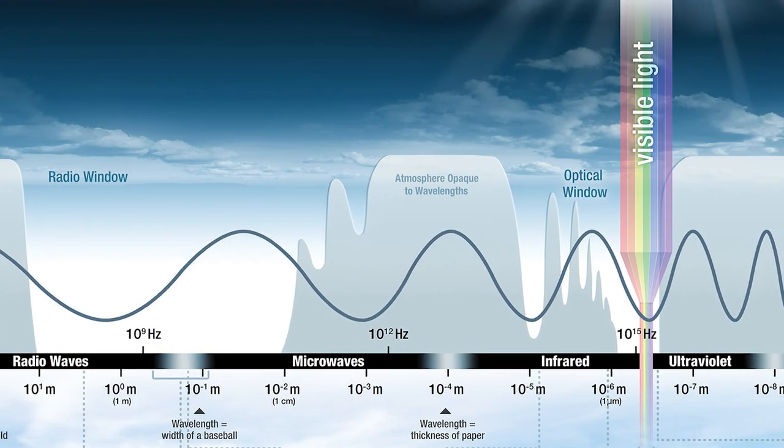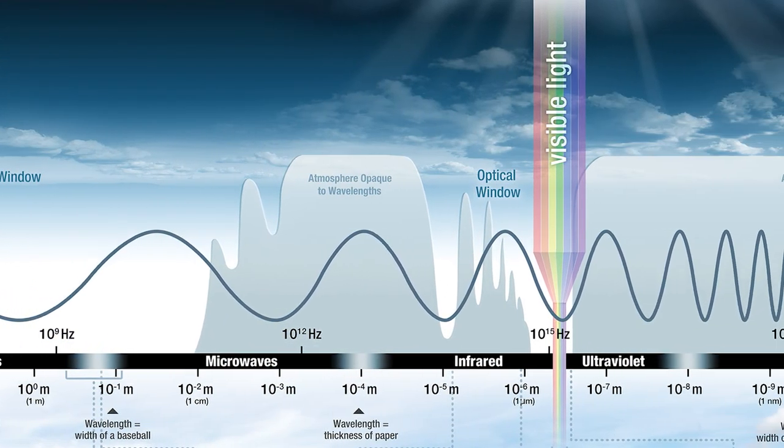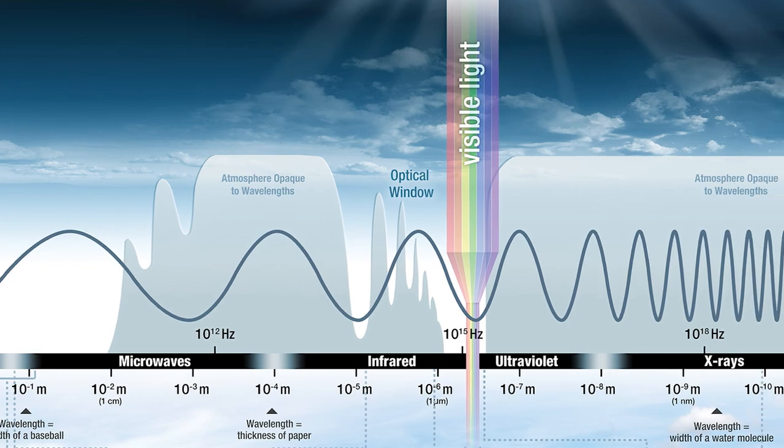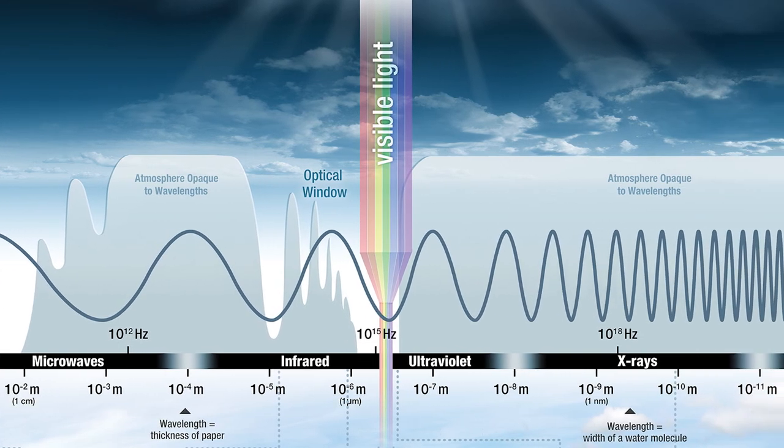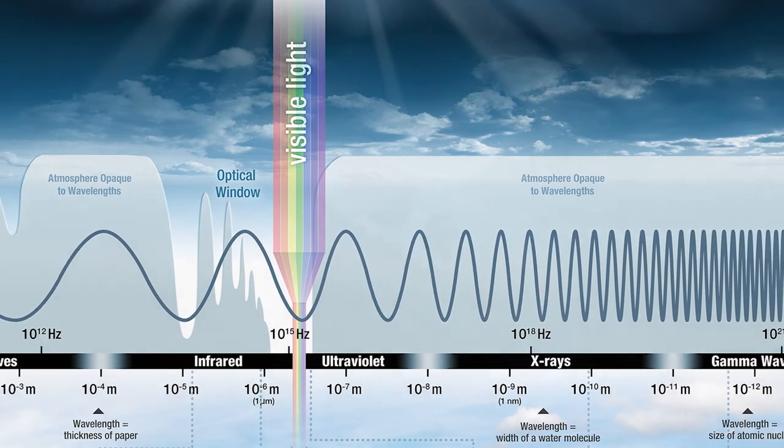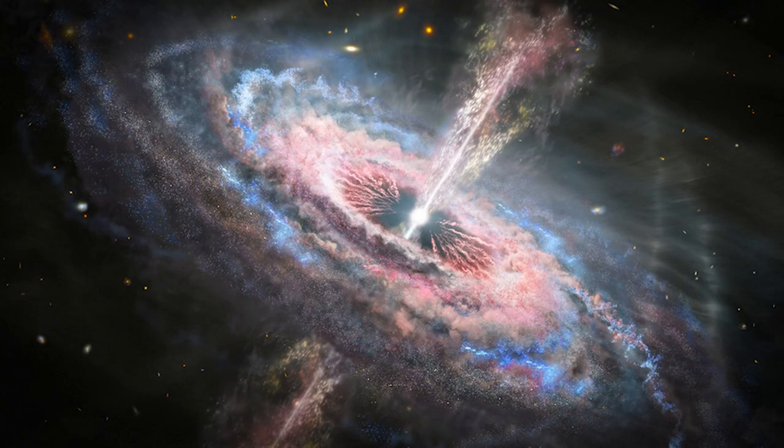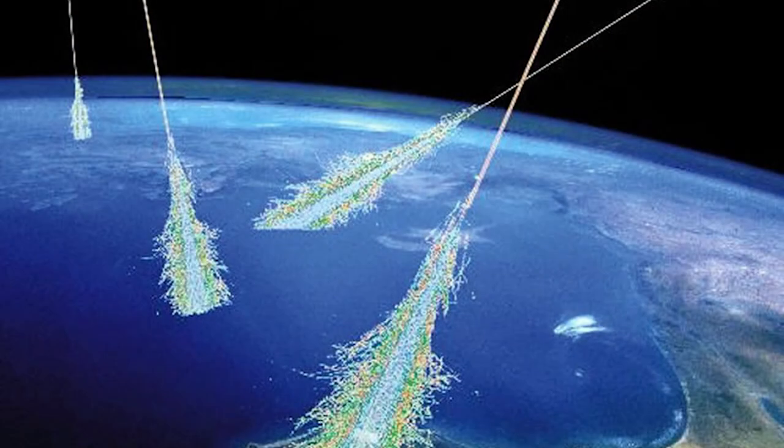In physics, radiation refers to the emission of energy. They can be electromagnetic waves like x-rays and gamma rays, or they can be moving subatomic particles such as alphas, betas, and muons.